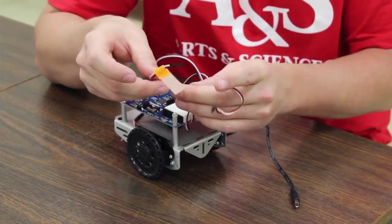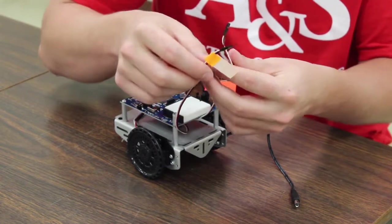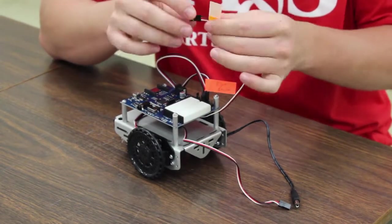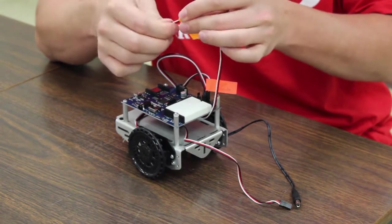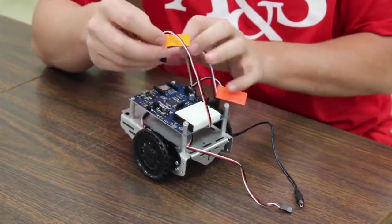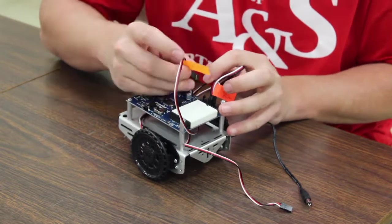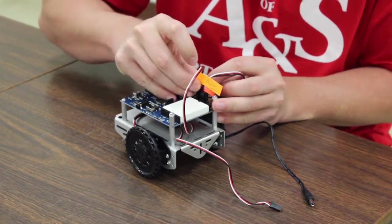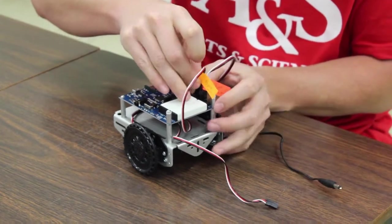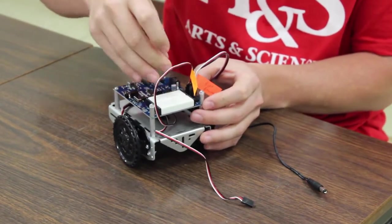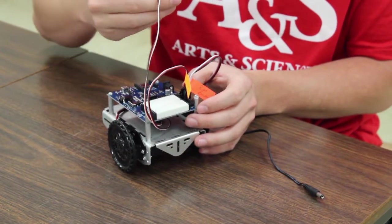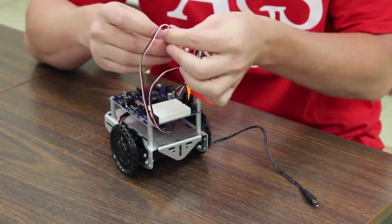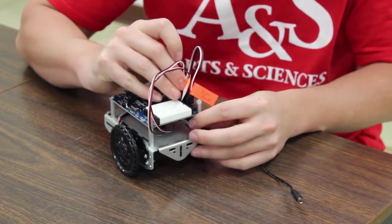Next we simply have to install the servo cables, and we have these routed. We have the right one labeled, and it goes to pin 13. Again, make sure that the black cable is towards the inside.